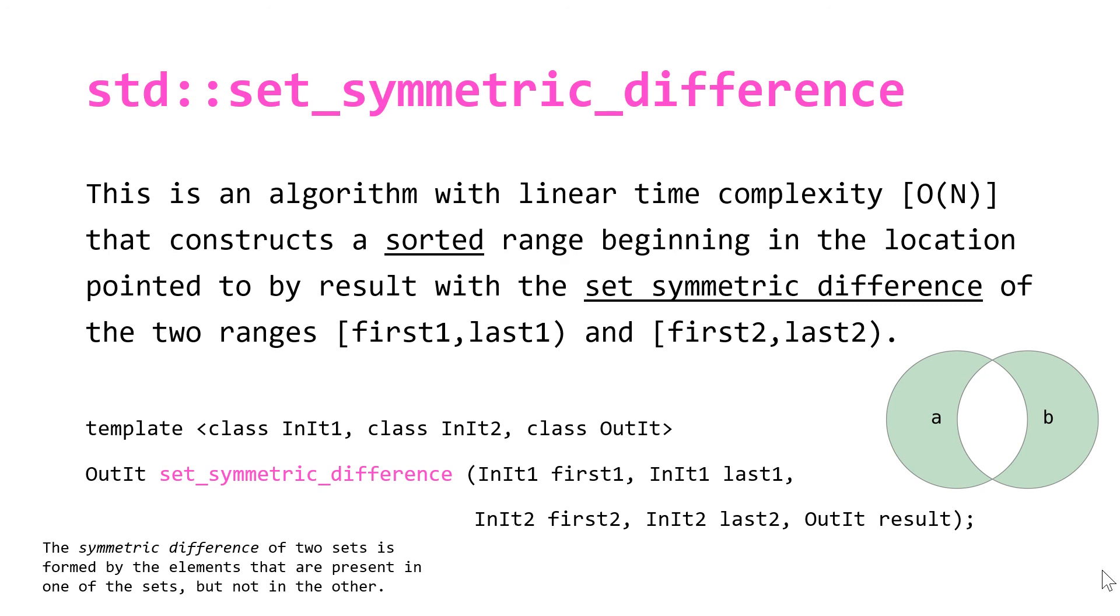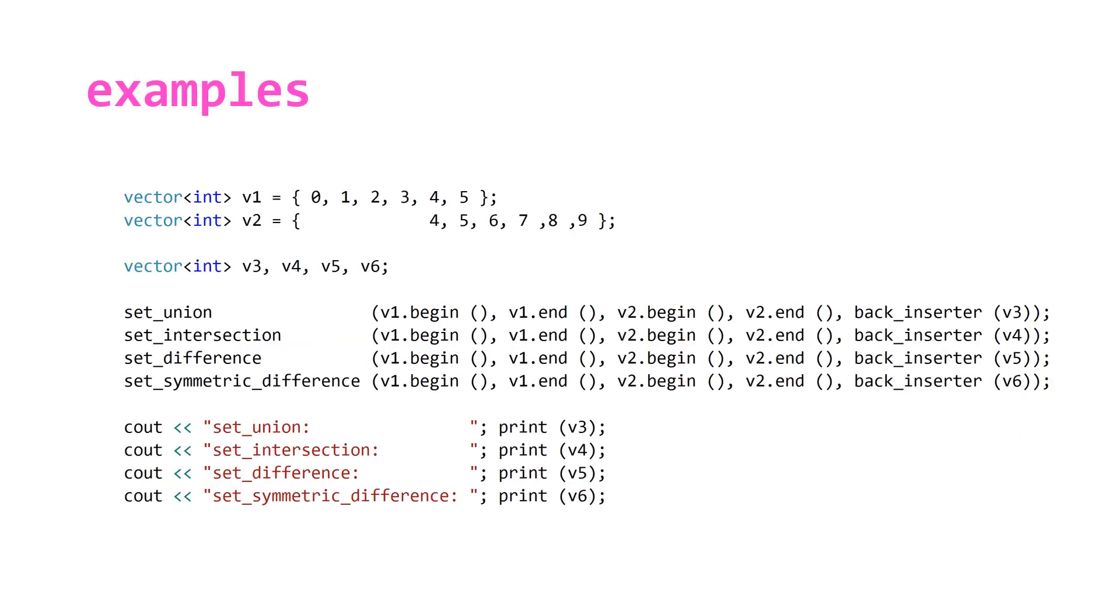Let's take a look at some examples using these algorithms. Our first example, we're going to use vectors. You can see here we've got six vectors. The first two are going to be used as our input for our input iterators. v1 has the elements 0 to 5, and v2 has the elements 4 to 9. You can see that they share elements 4 and 5, 0 to 3 are in v1, and 6 to 9 are in v2 but not vice versa.